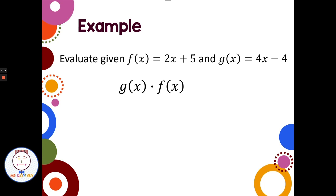Evaluate f(x) equals 2x plus 5, and g(x) equals 4x minus 4, and we want to find g(x) multiplied by f(x). So g(x) is referring to this expression, that's 4x minus 4, f(x) is referring to 2x plus 5, and we want to multiply these together.